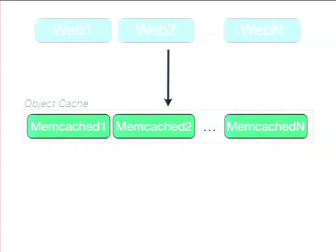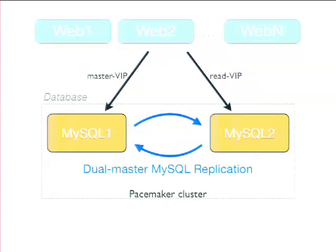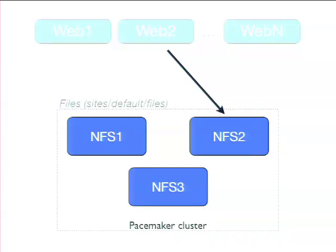We've got an object cache layer using Memcache — again four nodes, we may not need all four but that's where we started. Our MySQL is in a dual master configuration with the non-master node being a read-only node. We're using Red Hat 5 because the Pacemaker cluster we chose to implement on didn't support version 6 yet. That's actually the only layer from the Unix side that's not virtualized — we did that for speed. The last layer is our highly available NFS cluster, which we already had for our legacy sites and just added a bit more storage for Drupal's sites/default/files.